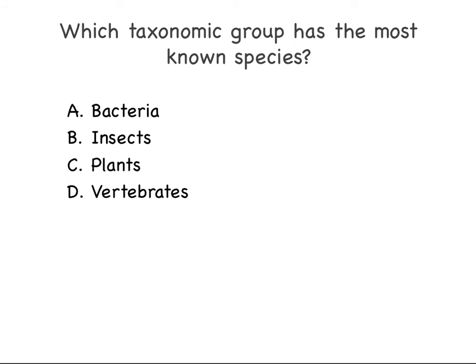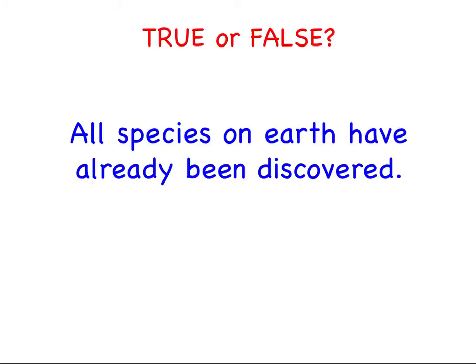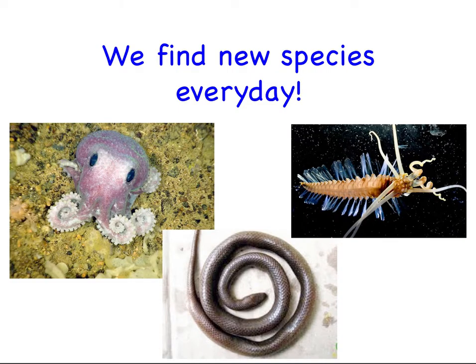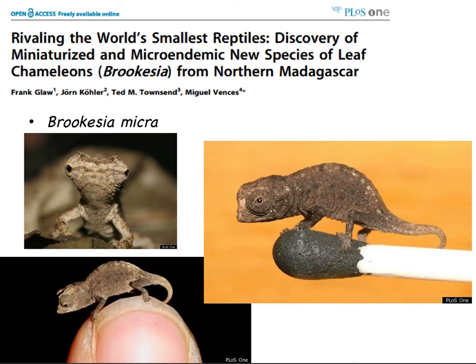So again, which taxonomic group has the most known species — bacteria, insects, plants, or vertebrates? True or false: do you think all species on Earth have already been discovered? We find new species every day. In fact, a short time ago we discovered a new species of leaf chameleon. This is a full-grown adult on the tip of a finger and the tip of a matchstick. It was discovered in northern Madagascar and published in February of 2012.